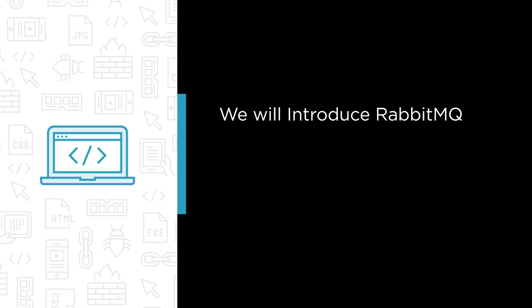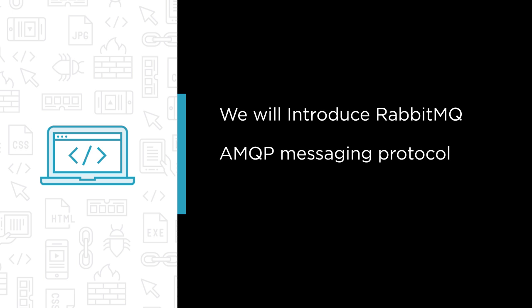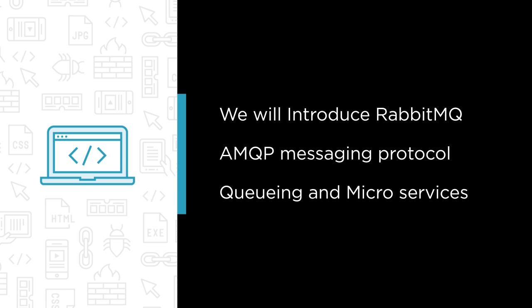We'll be covering some of the following topics. First we'll introduce RabbitMQ and do a demo of some of its features. Then we'll look more deeply at the AMQP messaging protocol and the message exchange types offered by RabbitMQ. We'll then look at message queuing and microservice architectures in general and build up a working example — an asynchronous microservices payment system built using RabbitMQ and Web API.